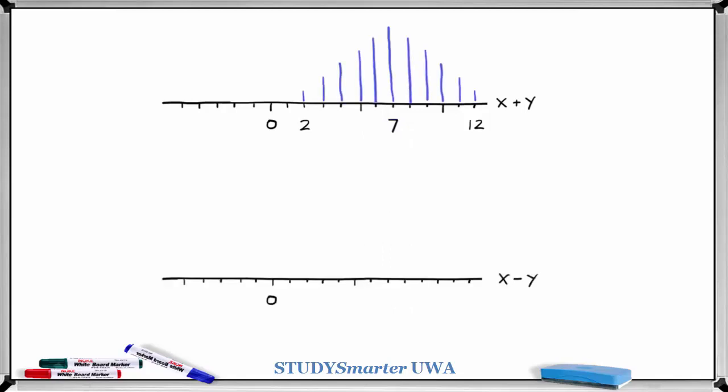For x minus y, the largest result we can get is if x is six and y is one, that's a difference of five. The smallest result we can get is minus five. And the distribution looks like this.